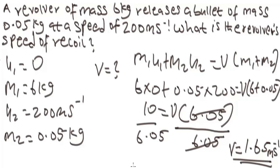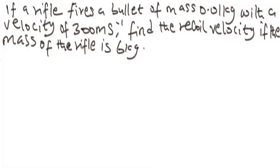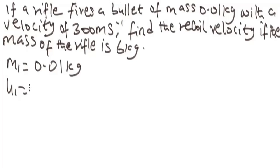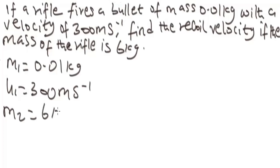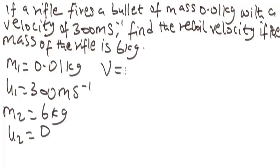Let's solve one more example. It says: a rifle fires a bullet of mass 0.01 kg with a velocity of 300 meters per second. Find the recoil velocity if the mass of the rifle is 6 kg. So our M1 is 0.01 kg, U1 is 300 meters per second, M2 is 6 kg, and U2 is 0 because the rifle is not moving. We are asked to find the recoil velocity V.